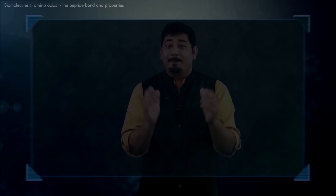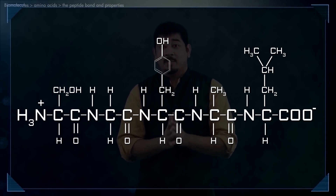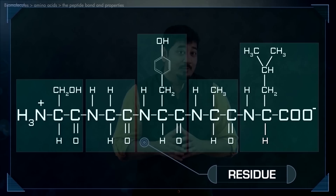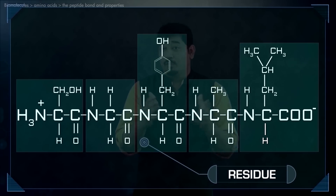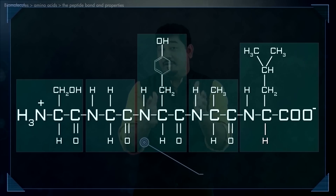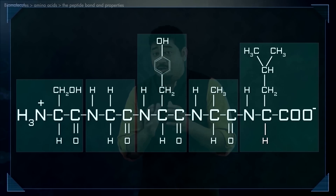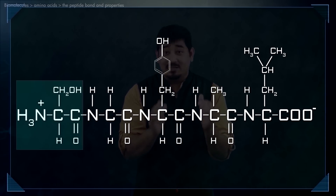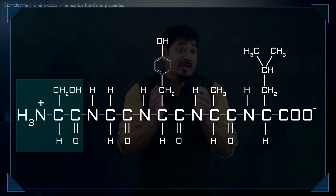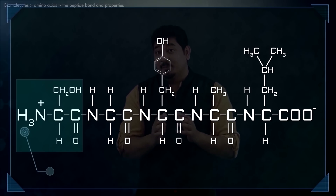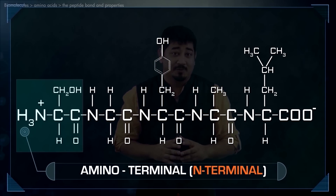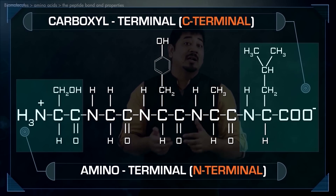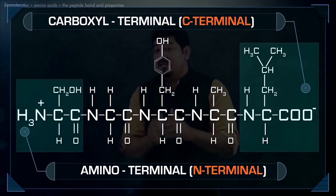Let's take a close look at the structure of a pentapeptide. An amino acid in a peptide is often called a residue — the part left over after losing the elements of water, specifically a hydrogen atom from its amino group and a hydroxyl moiety from its carboxyl group. In a peptide, the amino acid residue at the end with a free alpha-amino group is called the amino terminal or N-terminal residue. The residue at the other end, which has a free carboxyl group, is called the carboxyl terminal or C-terminal residue.